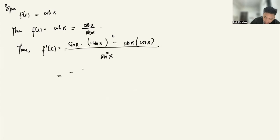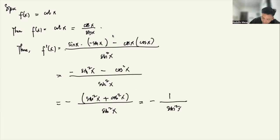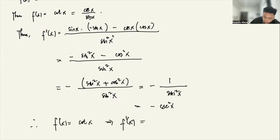This gives negative sine squared x minus cosine squared x all over sine squared x. Factoring out negative 1, we get negative times (sine squared x plus cosine squared x) over sine squared x, which equals negative 1 over sine squared x. And 1 over sine squared x is cosecant squared x. So the derivative is negative cosecant squared x.